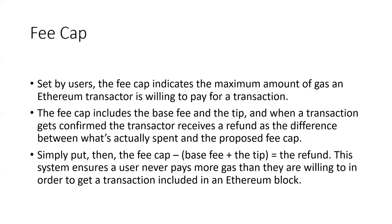There's also a fee cap, set by the user's wallet. The fee cap indicates the maximum amount of gas that the creator of the transaction is willing to pay. The fee cap includes the base fee and the tip. When a transaction gets confirmed, the transactor receives a refund equal to the difference between what's actually spent and the proposed fee cap — so the fee cap minus the base fee and the tip equals the refund. This system ensures a user never pays more gas than they're willing to in order to get a transaction included in an Ethereum block.